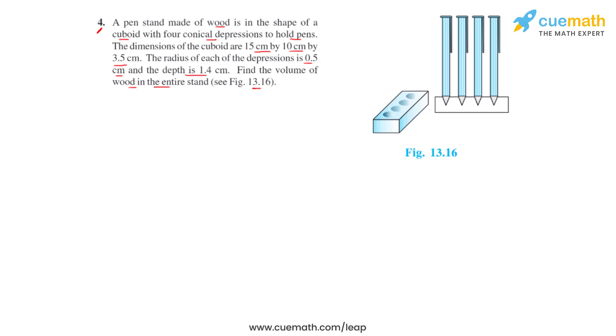So this is the cuboidal wooden block that we have in which there are four conical depressions that are made so that in them the pens can stand. Now this is the top view, but if we look from inside, this is how the four conical depressions are.